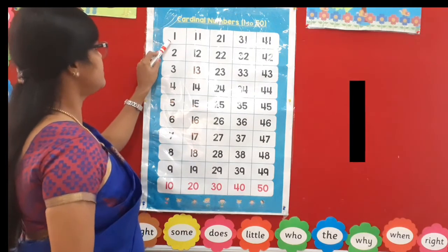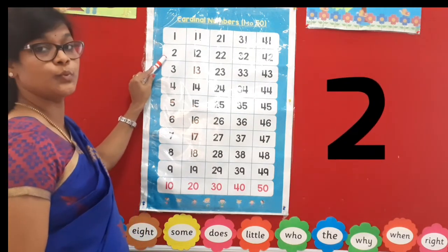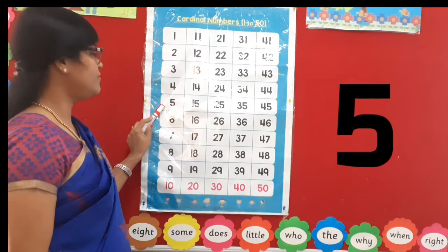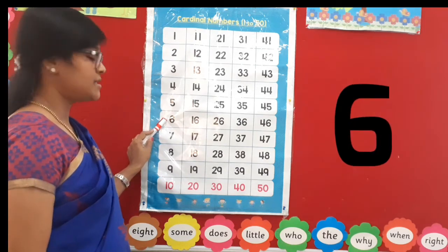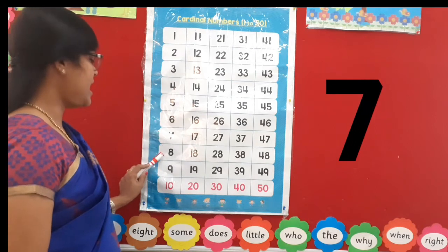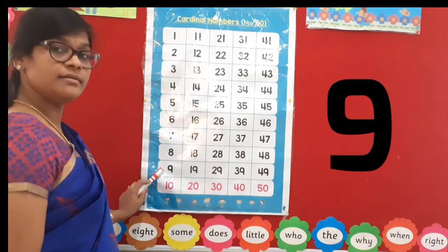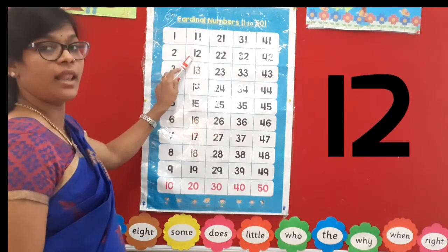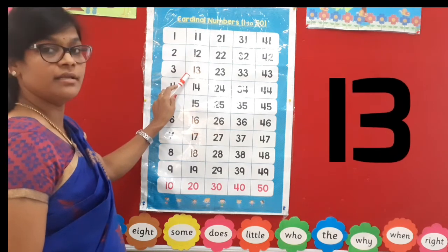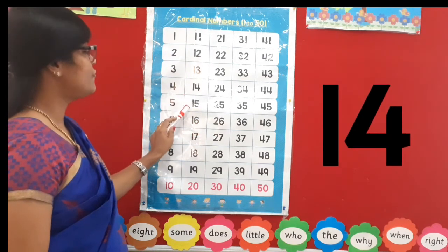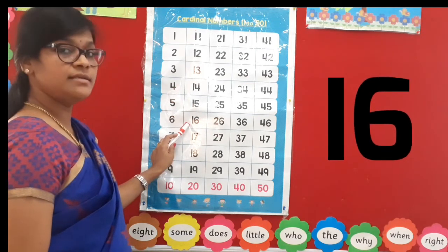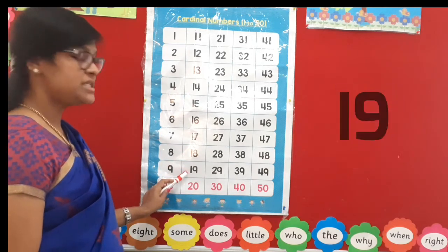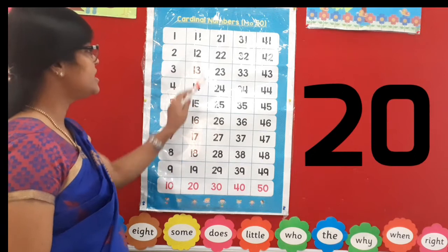1, 2, 3, 4, 5, 6, 7, 8, 9, 10, 11, 12, 13, 14, 15, 16, 17, 18, 19.